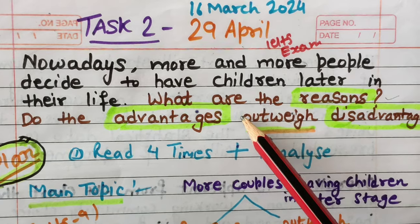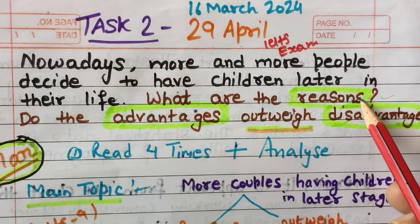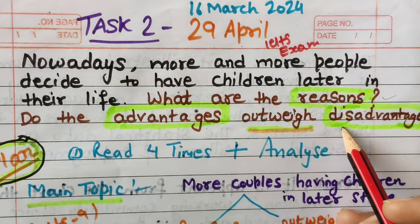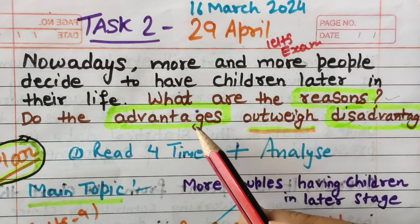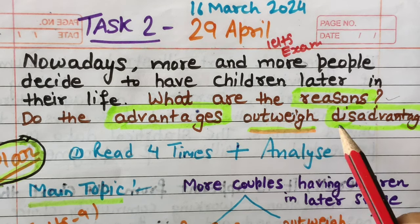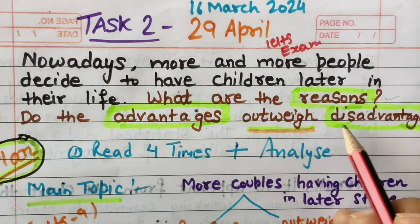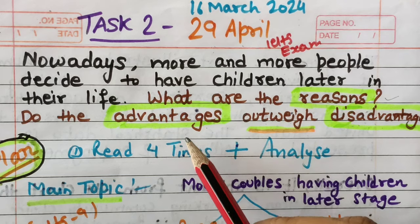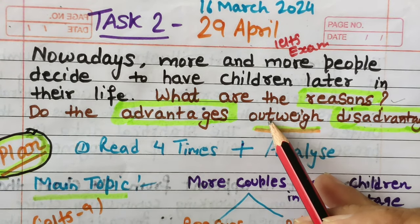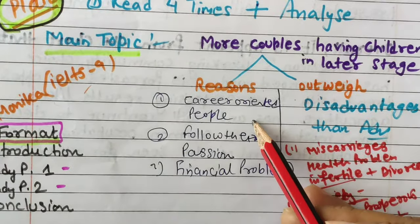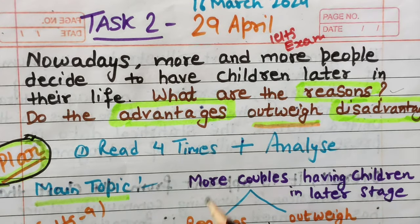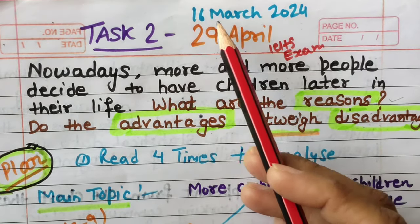In this video, I will tell you how to attempt these questions — specifically two-part questions. In the first body paragraph we will talk about reasons or causes of the problem, and in the second body paragraph we will talk about advantages versus disadvantages and which one outweighs the other. We will also cover brainstorming points, how to generate ideas, vocabulary, and write a full essay without a template.